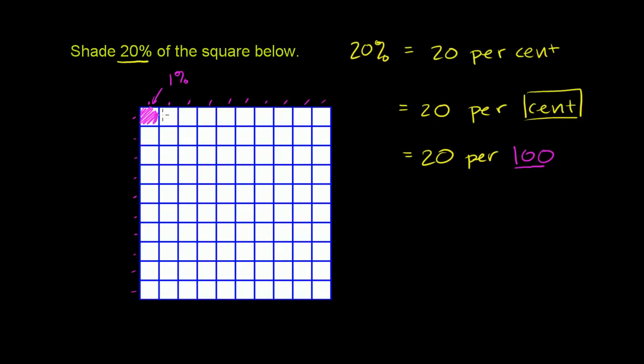If I were to shade another one, then those two combined, that's 2% of the entire square. It's literally 2 per 100, where 100 would be the entire square. So if we wanted to do 20,